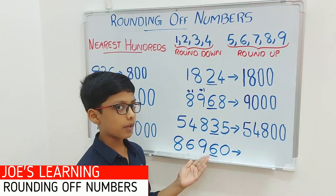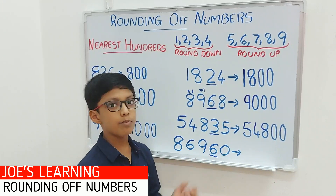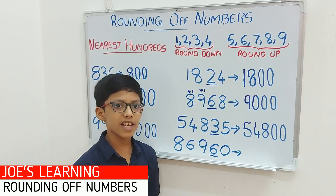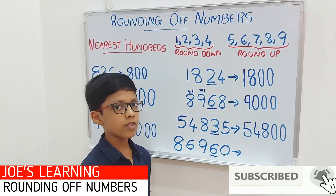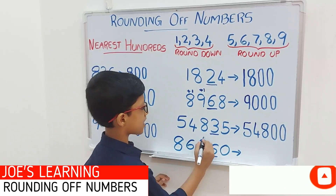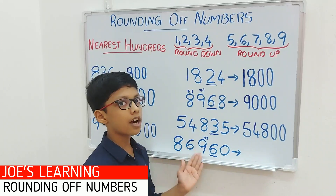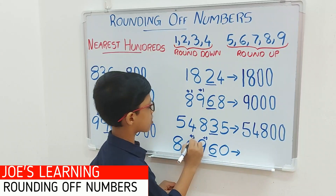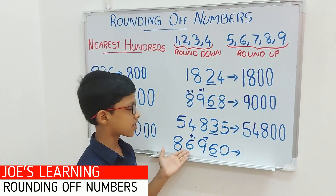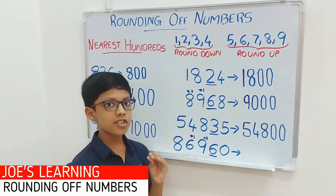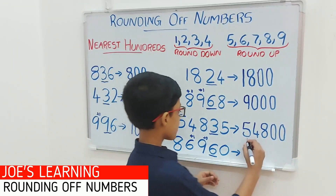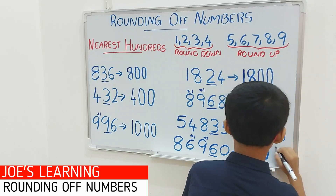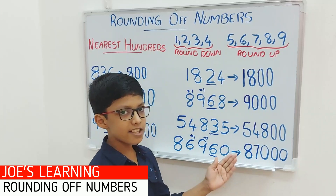Now let's take a look at this example, that is 86,960. First you have to look at the digit in the tens space — 6 is in the tens space. We compare it with 5: 6 is greater than 5. So we have to put a 0 in the ones and tens space and add 1 to the hundreds space. The digit in the hundreds space is 9, so 9 plus 1 is 10. We carry over to the thousands space — 6 plus 1 equals 7. So 86,960 rounded off to the nearest hundreds equals 87,000.